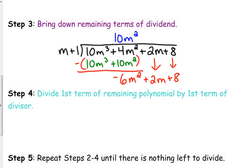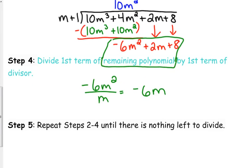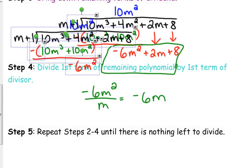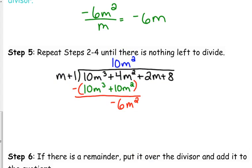Then we're going to start repeating the process. But what we're going to do is this time, we're going to divide the first term of the remaining polynomial. This is the remaining polynomial right here, the negative 6m² plus 2m plus 8. So we're going to divide the negative 6m² by m. That gives us negative 6m. So that's going to go beside the 10m².